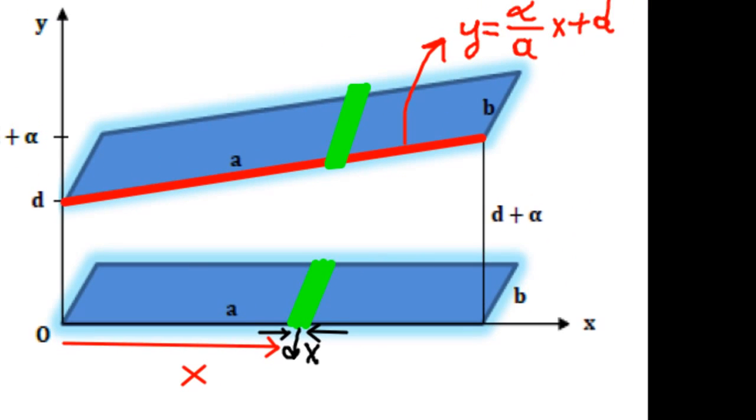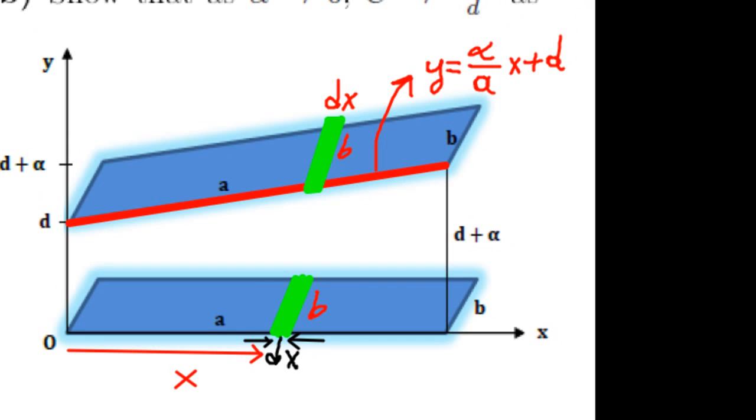Because the width of this piece is b, then the infinitesimal area dA is b times dx.